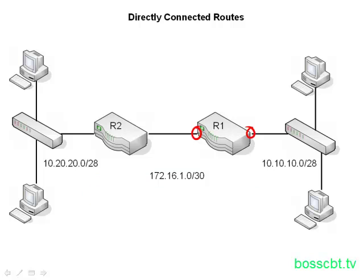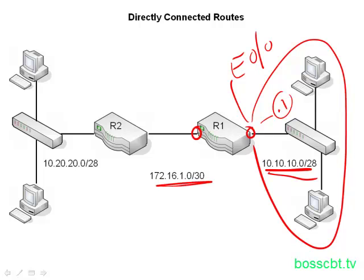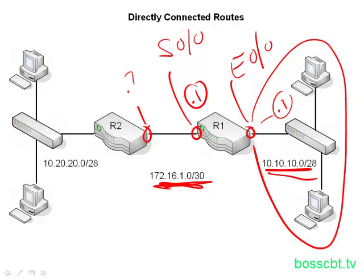Specifically in this diagram, for this local area network we have the subnet 10.10.10.0/28. This interface is going to use .1 in that subnet, and it's called Ethernet 0/0. This subnet here is used to number the interfaces for the T1 that connects these two routers, the serial link. On router one, that is called serial 0/0, and the IP address used in this subnet is .1. On the other side, which we'll see later, it's .2.